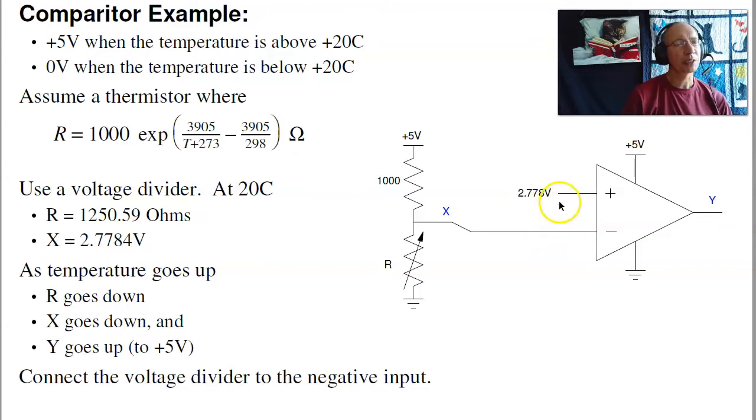So I want to switch at 2.778 volts. In order to determine the plus minus, take the limits. At really high temperatures, R goes to zero, x goes to zero. At high temperatures I want the motor to turn on, so connect this to the minus input. With that, that's kind of the comparator that I have to open the sunroom door.